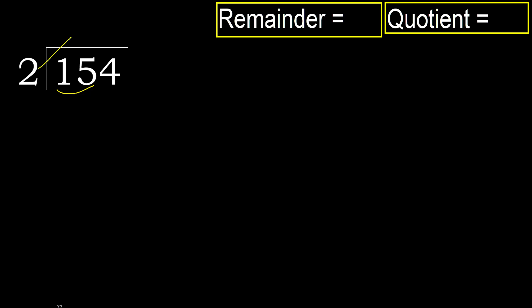2 multiplied by which number is nearest to 15, but not greater? 2 multiplied by 8 is 16. 16 is greater, so multiply by 7: 14. 14 is not greater.